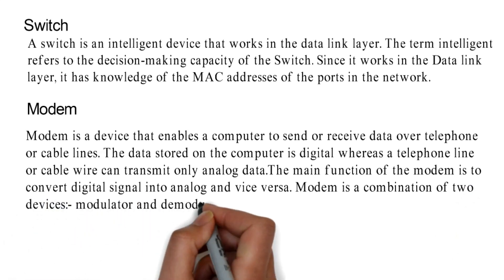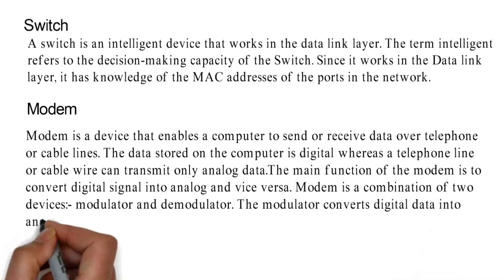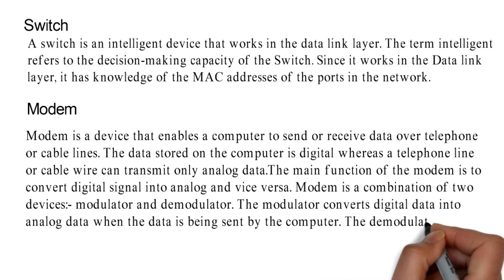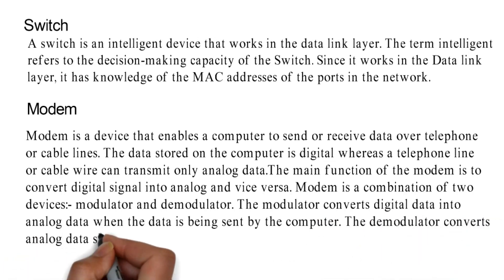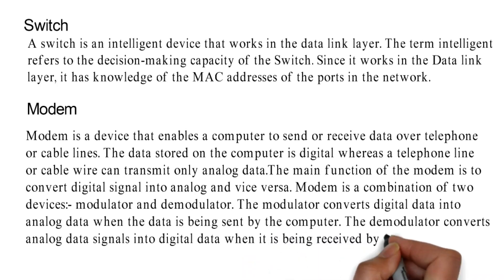Modem is a combination of two devices: modulator and demodulator. The modulator converts digital data into analog data when the data is being sent by the computer. The demodulator converts analog data signals into digital data when it is being received by the computer.